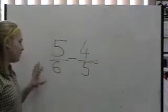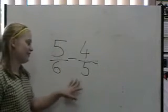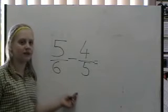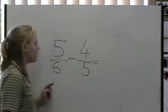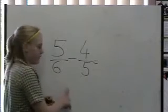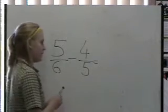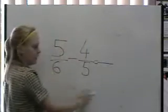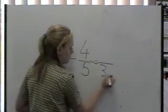Okay, so now we do 5 sixths take away 4 fifths. Remember, we have to find a common denominator before we can subtract the fractions. This one, we're going to do the shortcut technique. So denominator times denominator. So 6 times 5 equals 30. So that's our new common denominator.